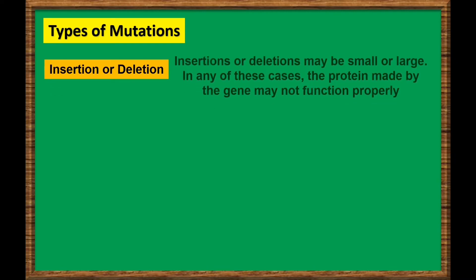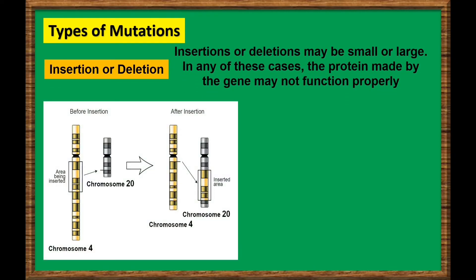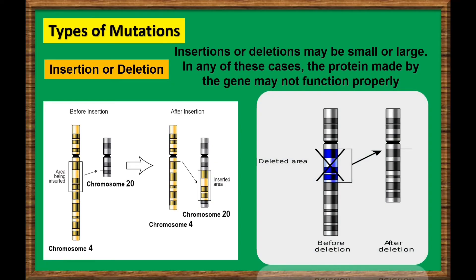Here is another type of mutation: insertion or deletion. An insertion changes the number of DNA bases in a gene by adding a piece of DNA. A deletion removes a piece of DNA. Insertions or deletions may be small, happening in one or a few base pairs within a gene, or in a large section of a chromosome. In any of these cases, the protein made by the gene may not function properly.